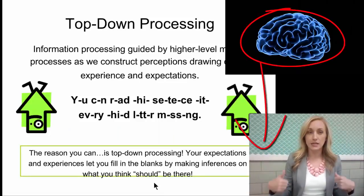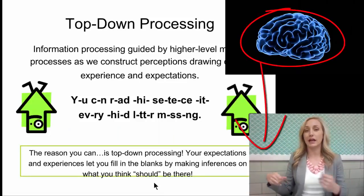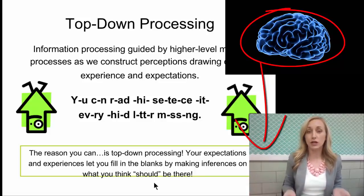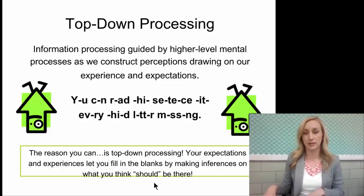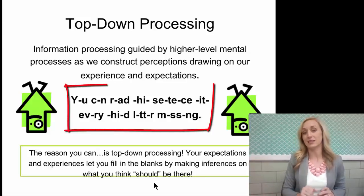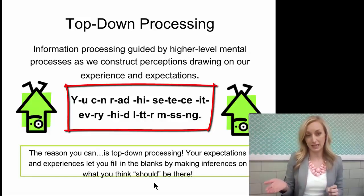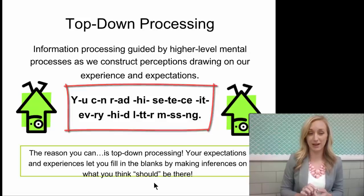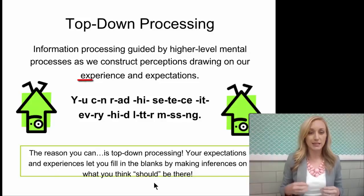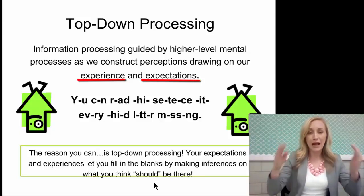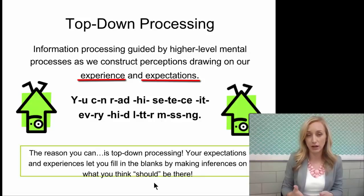Top-down processing is information processing guided by higher-level mental processes. As we construct perceptions, drawing on our experience and expectations — and you should underline this — top-down processing is completely dependent on experience and expectations. For instance, you can read a sentence with every third letter missing. You can read it because of top-down processing. Your expectations and experiences let you fill in the blanks by making inferences on what should be there, because you have experience with letters and words as a reader.